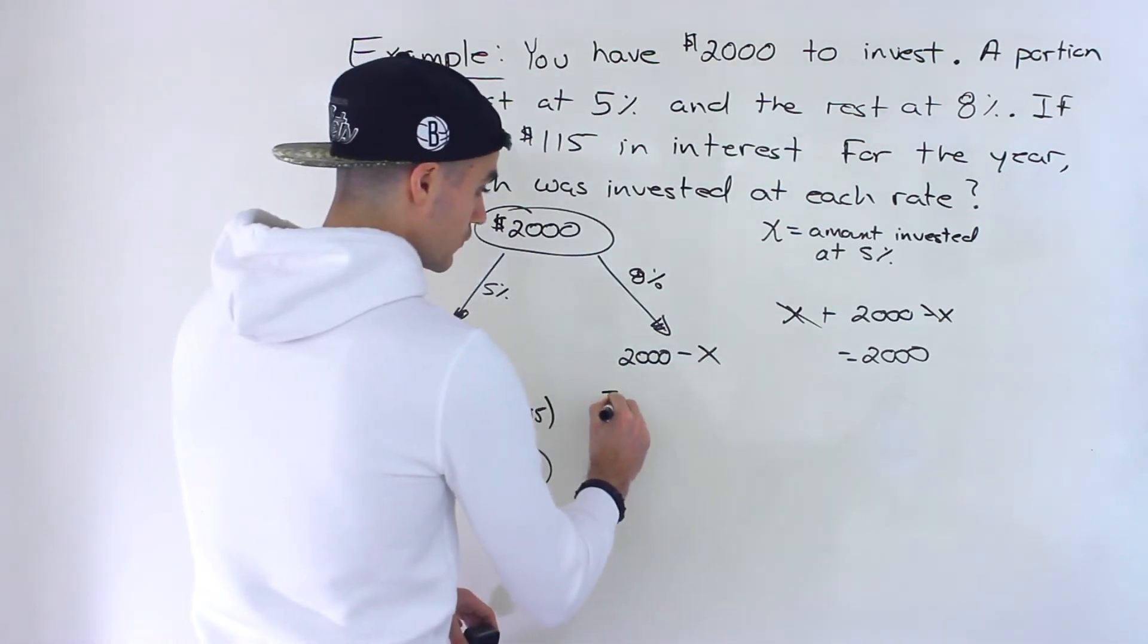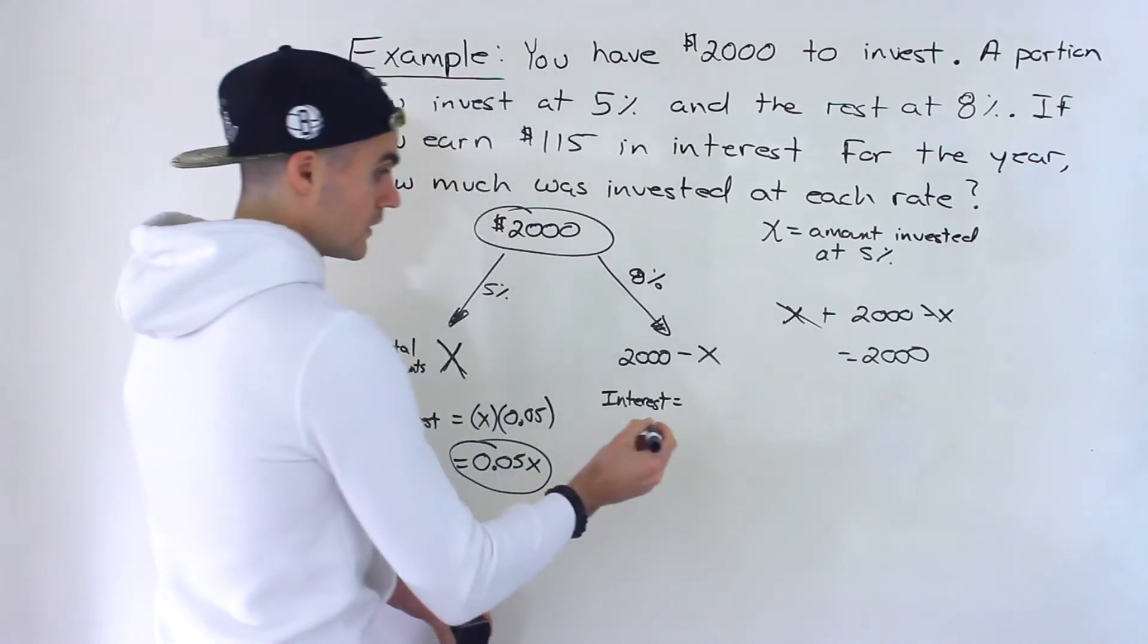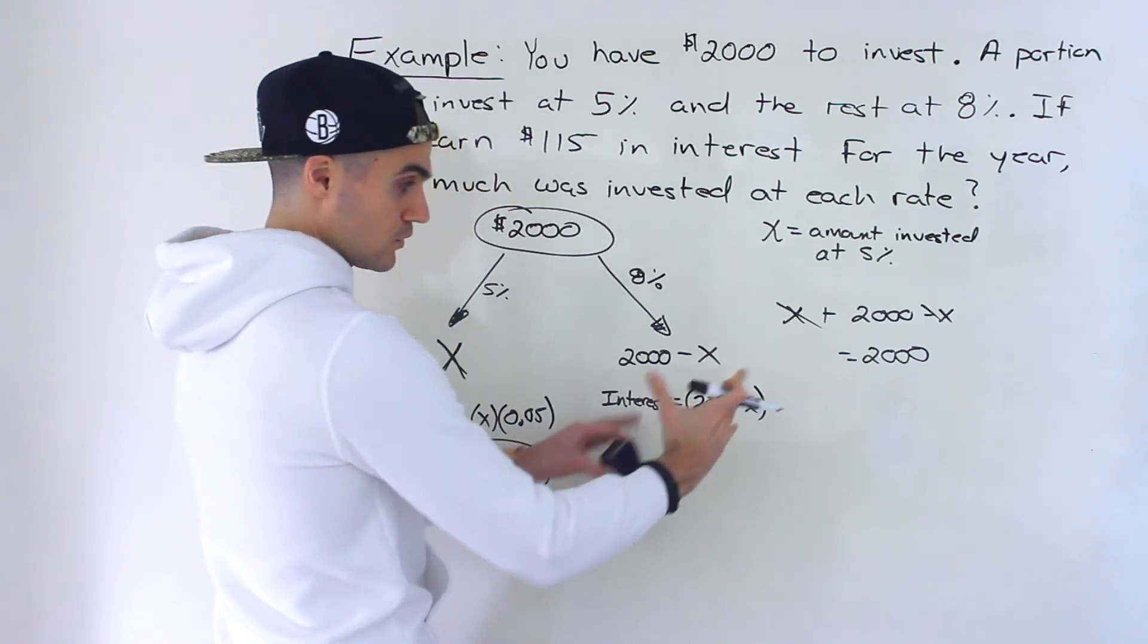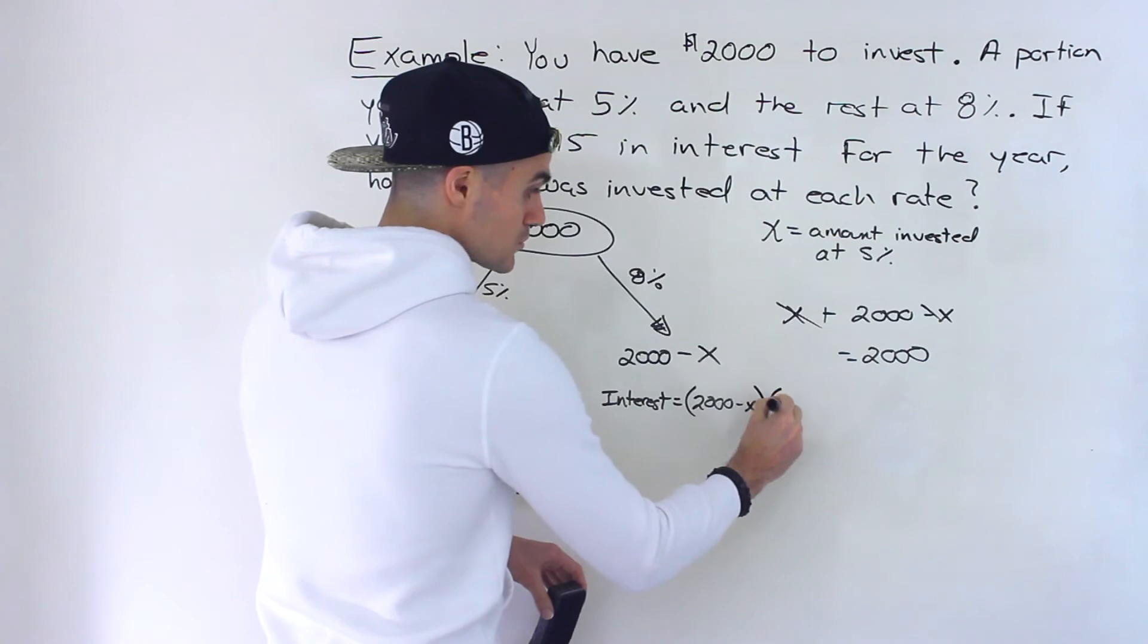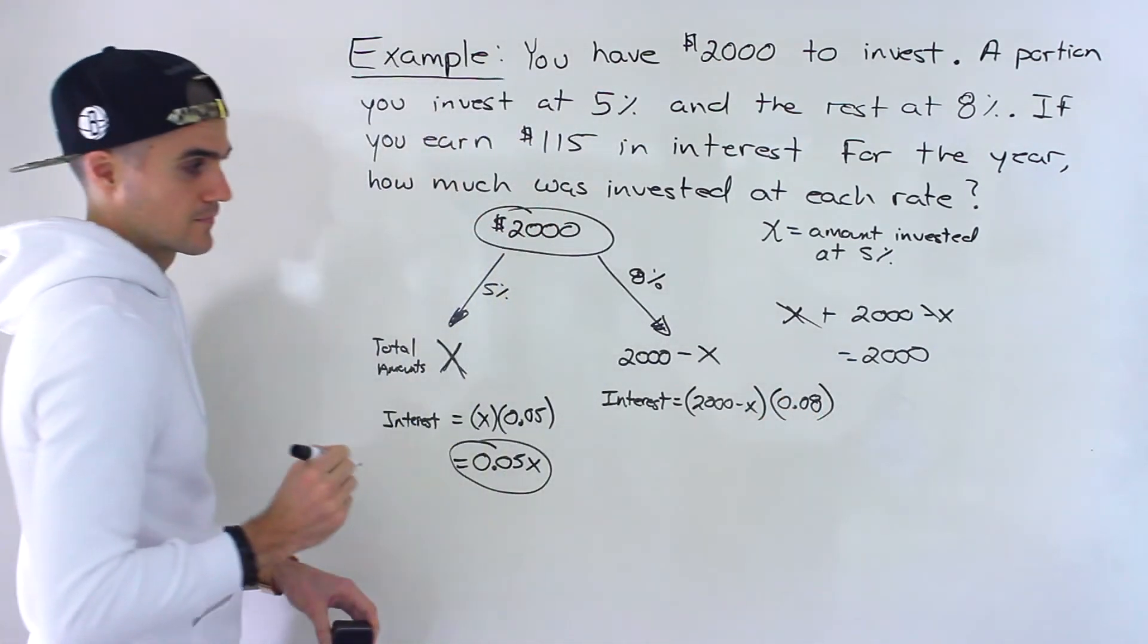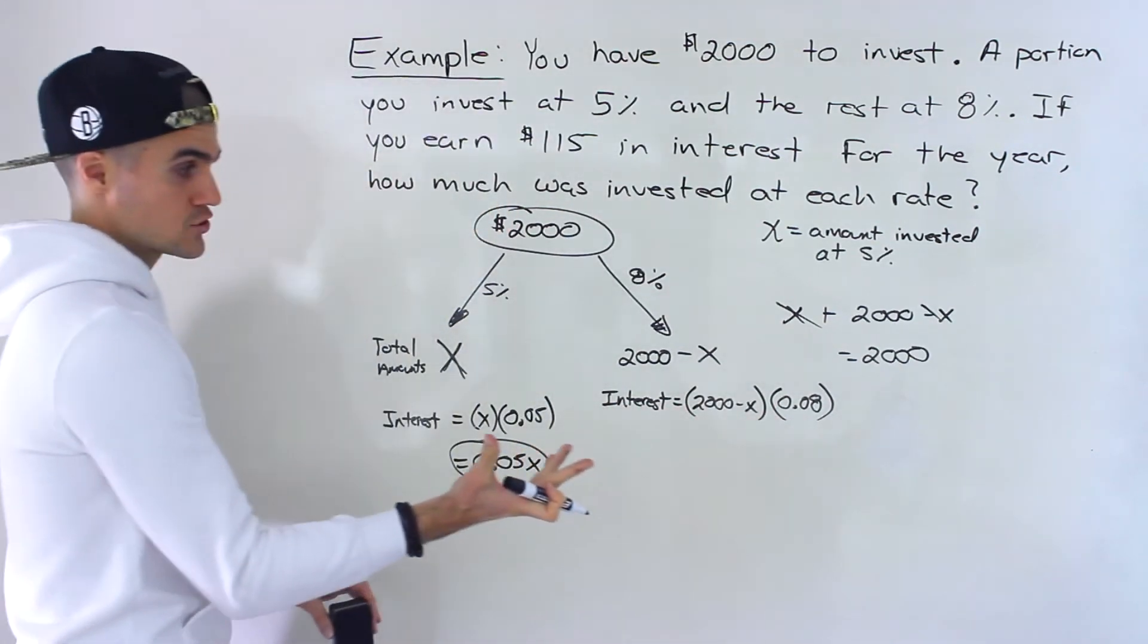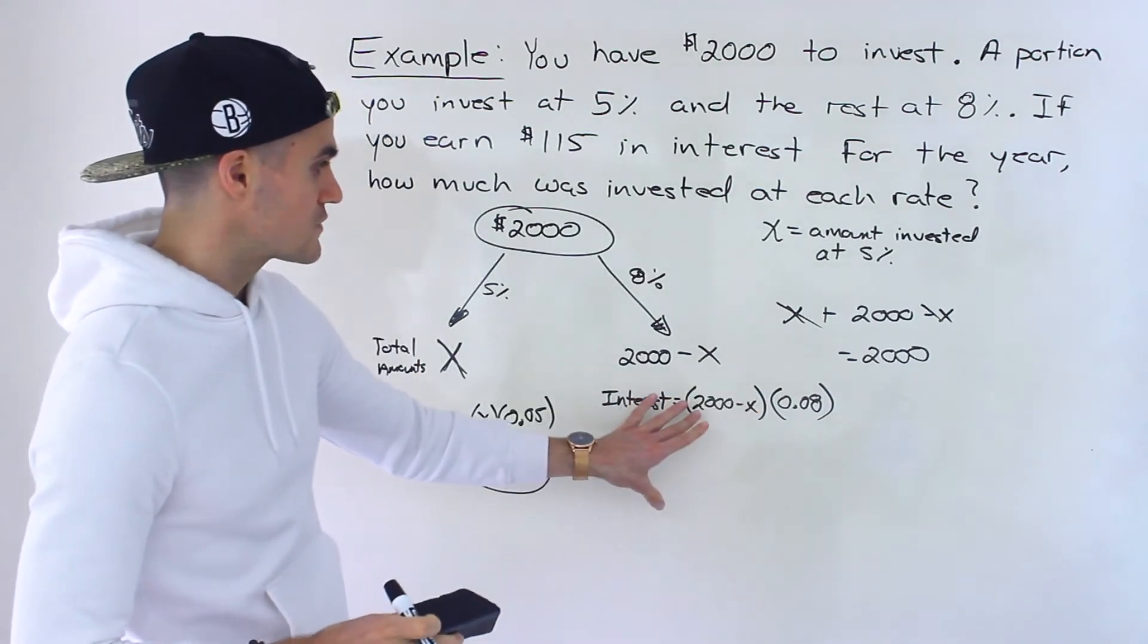What about this investment over here? What's the interest going to be? Well, it's going to be this total amount, which is $2,000 minus X. You've got to put that in brackets. Be careful, we're taking that total amount right there, investing it at 8%. So we're going to multiply it by 0.08 like that. Total times interest rate, total times interest rate. And this over here, I'm going to just leave like this for now.